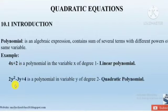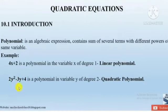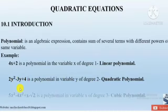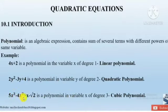Now, a quadratic polynomial is given in variable y. That is 2y squared minus 3y plus 4. Here the highest power of the variable is 2, so it is a quadratic polynomial. A cubic polynomial has the highest power equal to 3. For example, 5x cubed minus 4x squared plus x minus root 2 is a polynomial in variable x of degree 3, so it is a cubic polynomial.